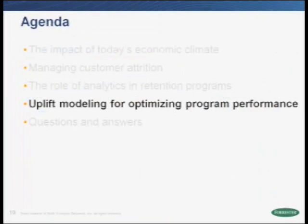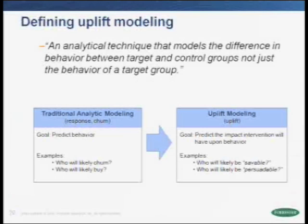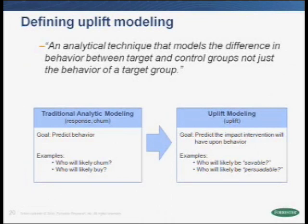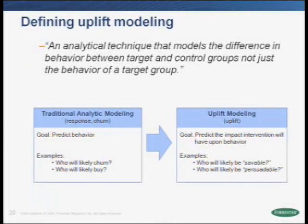This brings me to the next topic around uplift modeling and using it for optimizing program performance. When you think about uplift modeling, it's important to put a definition around it. At Forrester, we define uplift modeling as an analytical technique that models the difference in behavior between target and control groups — not just the behavior of the target group. Traditional analytical approaches focus on predicting the likelihood of a customer to perform a specific action, such as buying a product or churning. In contrast, uplift modeling focuses on predicting the change in likelihood to conduct that same action.